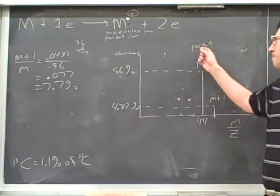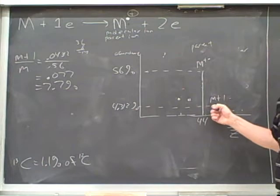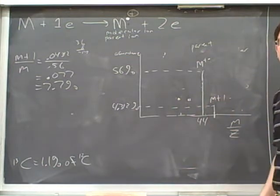So the m peak, the parent peak, is the big peak that's furthest to the right. And then there will be a little tiny peak right next to that. That's the m plus 1 peak. So that's how you pick out these two peaks from the spectrum.